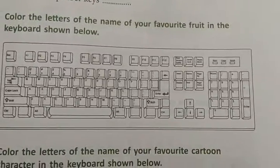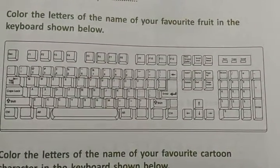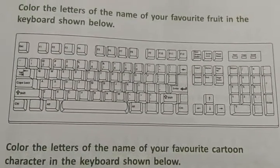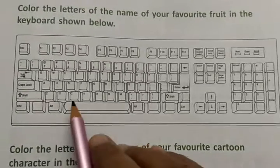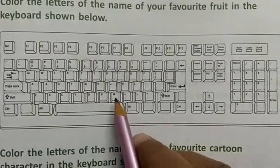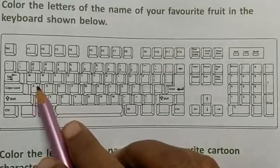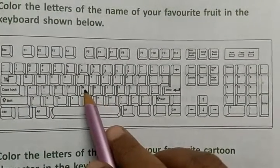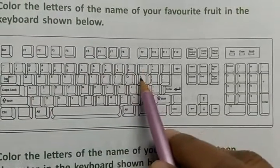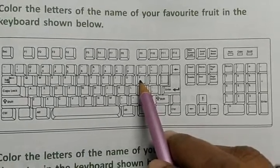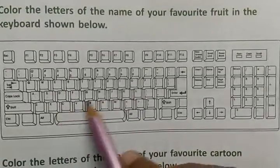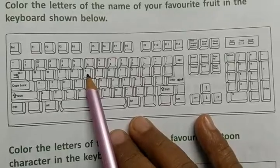Now what do we need to do? Color the letters of the name of your favorite fruit. If you have a favorite fruit, you have to color it in the keyboard. My favorite fruit is mango, so I will write here M, A, N, G, O. Or if your favorite fruit is apple — A, P, P, L, E. Your favorite fruit name — you have to look at it and color it. This is your homework.